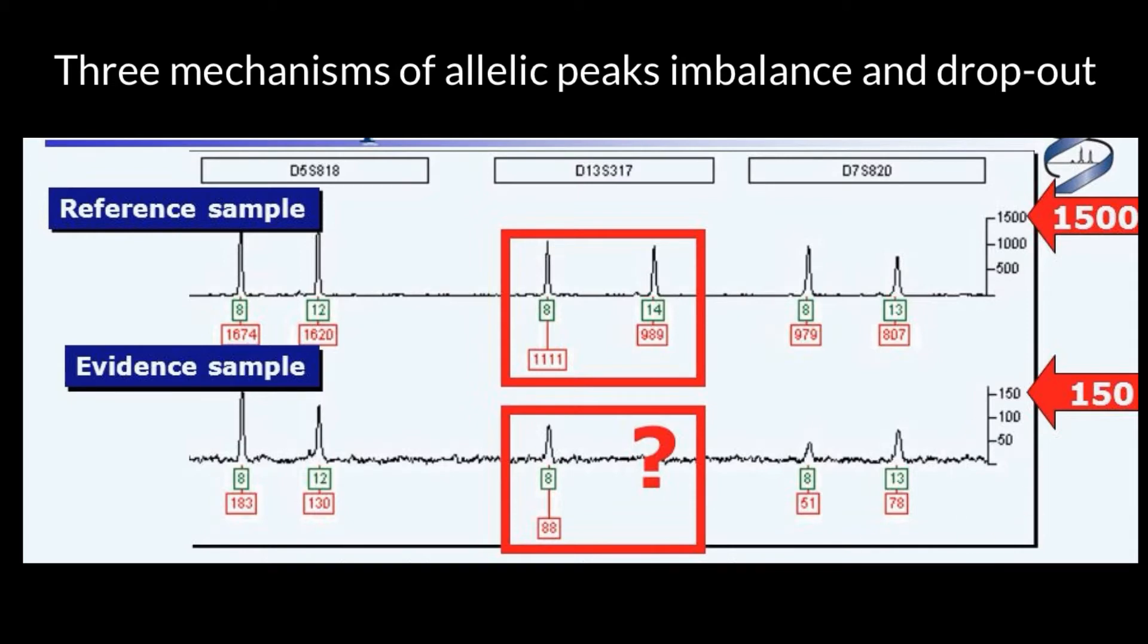So today we are going to compare these two electropherograms. And on the first glance it looks like for one locus these two samples have the same number of repeats in alleles. So 8 and 12 here, 8 and 12 here.